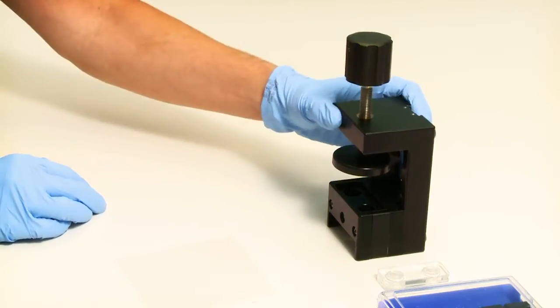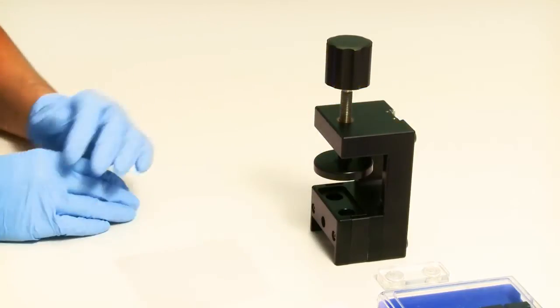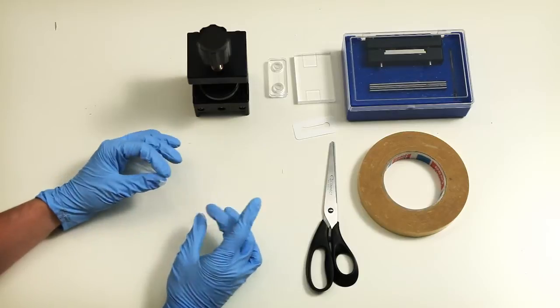This video is to show you how to mount your sample in the clamping cell and how to mount the cell in Surpass. We are going to mount a flexible polymer foil.